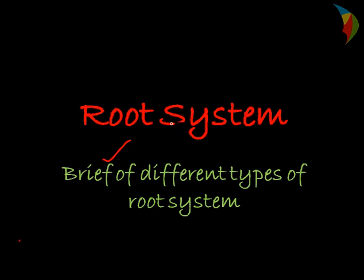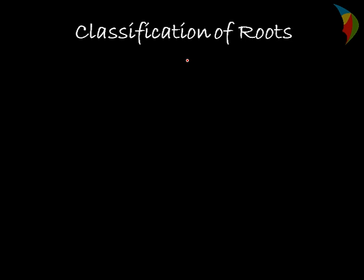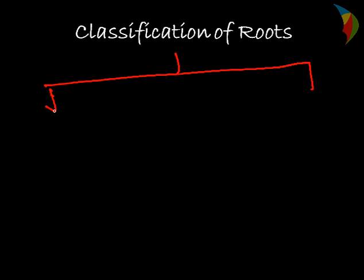Hello friends. Today we will discuss about the root system — a brief overview of the different types of root systems available in plants. We can classify roots into three types. The first is called the tap root system.